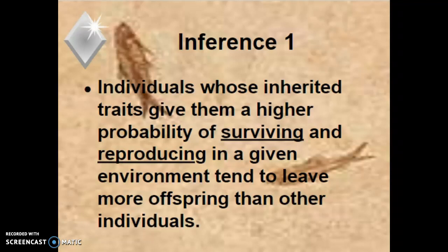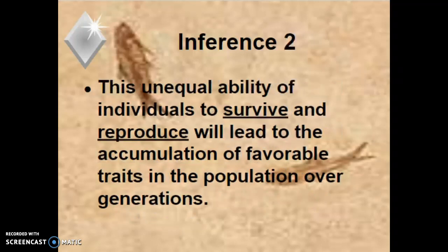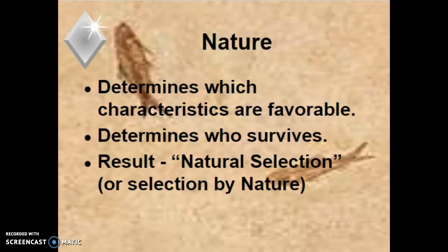That makes sense: if you have genetic traits that make you healthier and better at reproducing, you'll leave more offspring than someone who doesn't have those adaptations. That unequal ability of individuals to survive and reproduce leads to accumulation of favorable traits in the population over time, because individuals with desirable traits get to mate and pass those traits to the next generation, whereas undesirable traits won't be represented. Nature determines which characteristics are favorable. Two things drive evolution: mate choice and survival success.